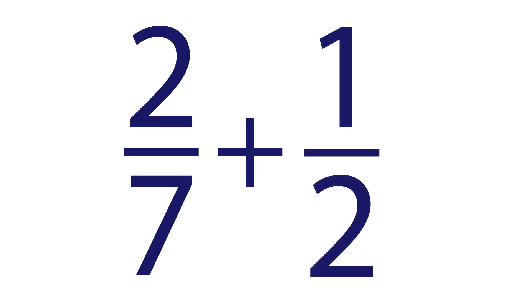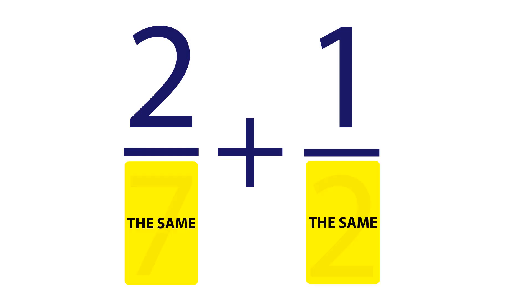2 over 7 plus 1 half. We can't add fractions with different denominators. Before we can add them, we must make the denominators the same.